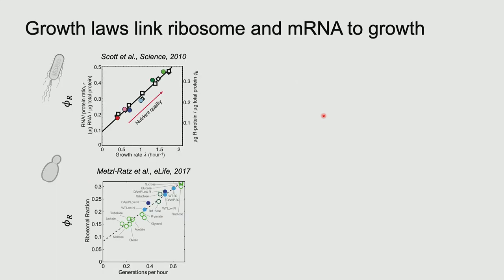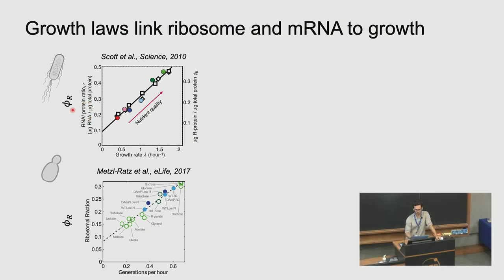In the literature, there are relationships that link key quantities of protein synthesis to growth. You've seen these plots during the last few days. Here on the left, you see the relationship between the ribosomal content, as proxied by the ribosomal fraction, against the growth rate. The ribosomal fraction grows with growth rate, and this is the case both for E. coli and budding yeast. One typical interpretation is that to grow faster, you need to increase your ribosomal content — ribosomes are limiting, at least when you modulate growth rate with nutrients.